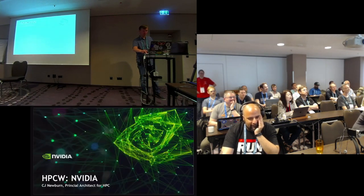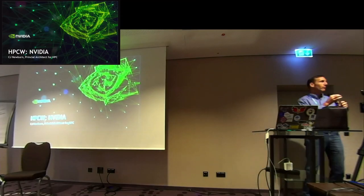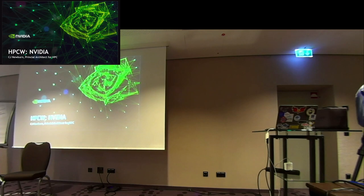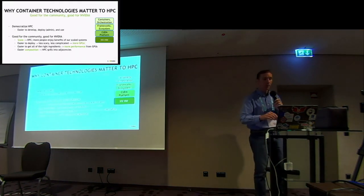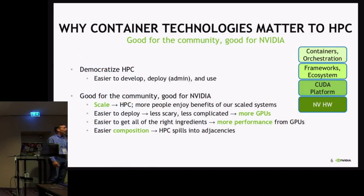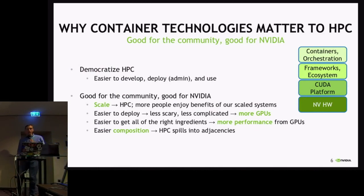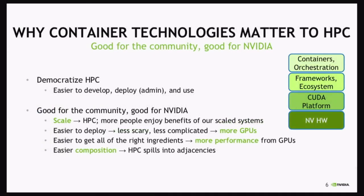Hi, I'm CJ Newburn from NVIDIA, from the compute software part of NVIDIA where I drive strategy and roadmap, especially for HPC. Jensen, our leader, basically asked why aren't more people using HPC, and our conclusion was because it's hard. The question was: what do we do to make it easier? We want people to be able to scale and enjoy the benefits of scaled systems and make it easier to deploy — so things like GPUs seem less scary, and getting development apps to work on new platforms with the right versioned ingredients.